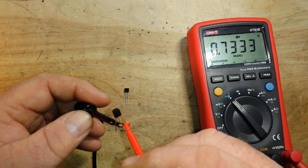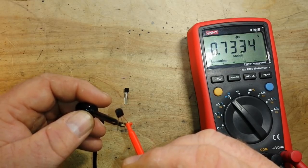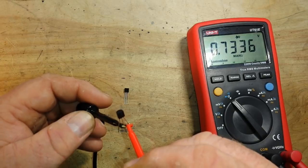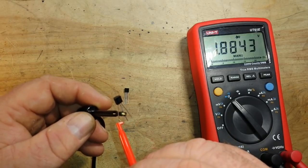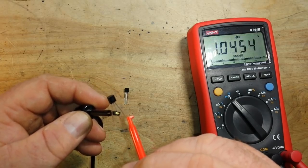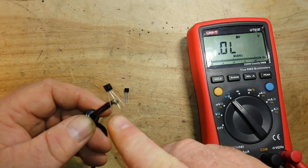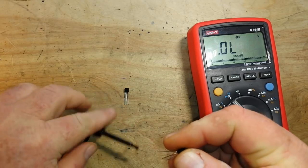0.733. So, this would be the emitter. This will go emitter base collector and it should be PNP because the base is negative.